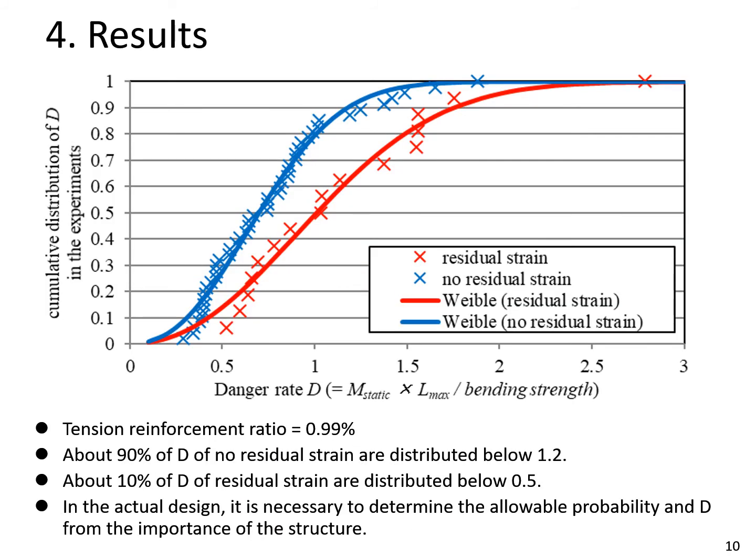This figure shows the results of all experimental cases with tension reinforcement ratio equals 0.99%. The red plots and lines show the results of residual strain. The blue plots and lines show the results of no residual strain. The horizontal axis represents D, where D equals M static times Lmax per bending strength. The vertical axis represents cumulative distribution of D.